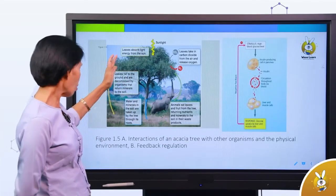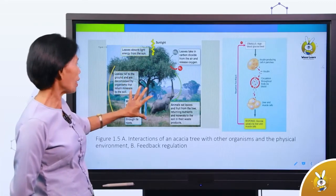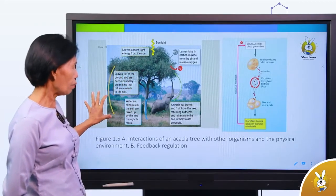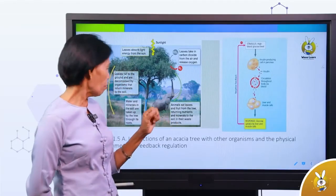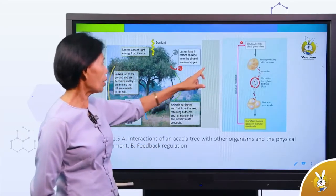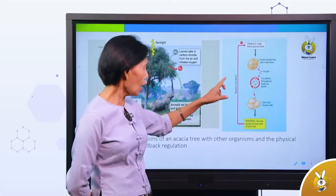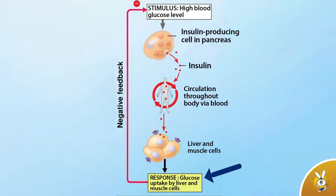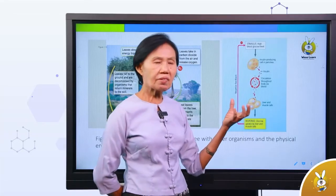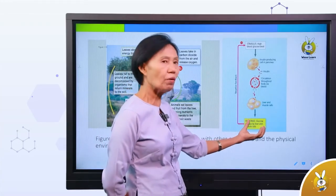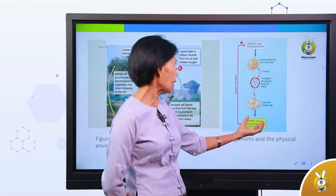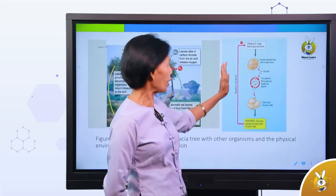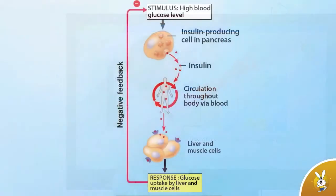Blood pressure and blood sugar regulation: when blood sugar is high, insulin-producing cells in the pancreas respond. This is a high blood sugar level response.